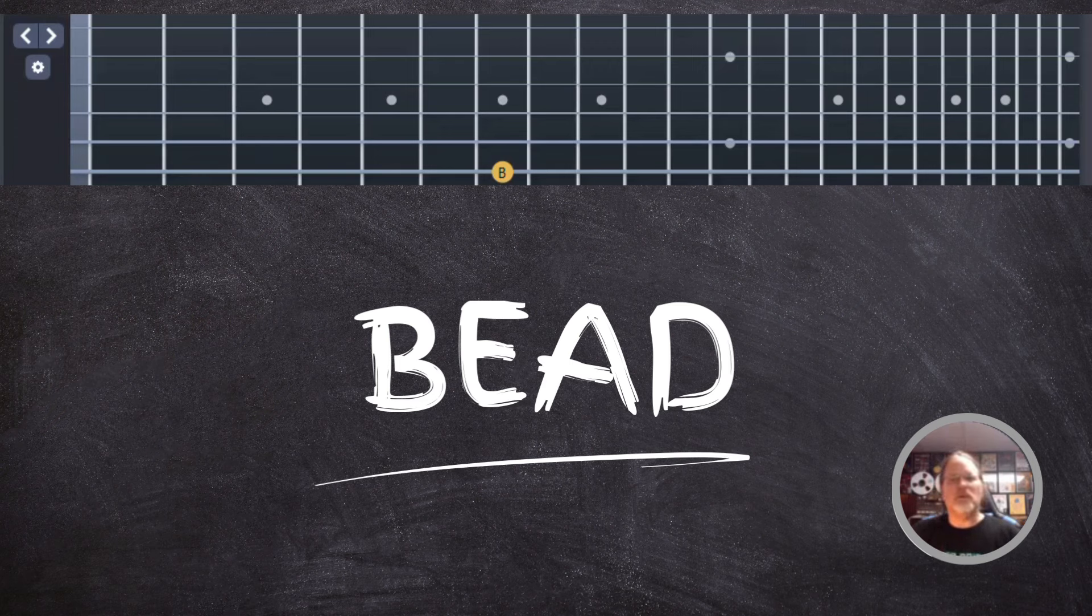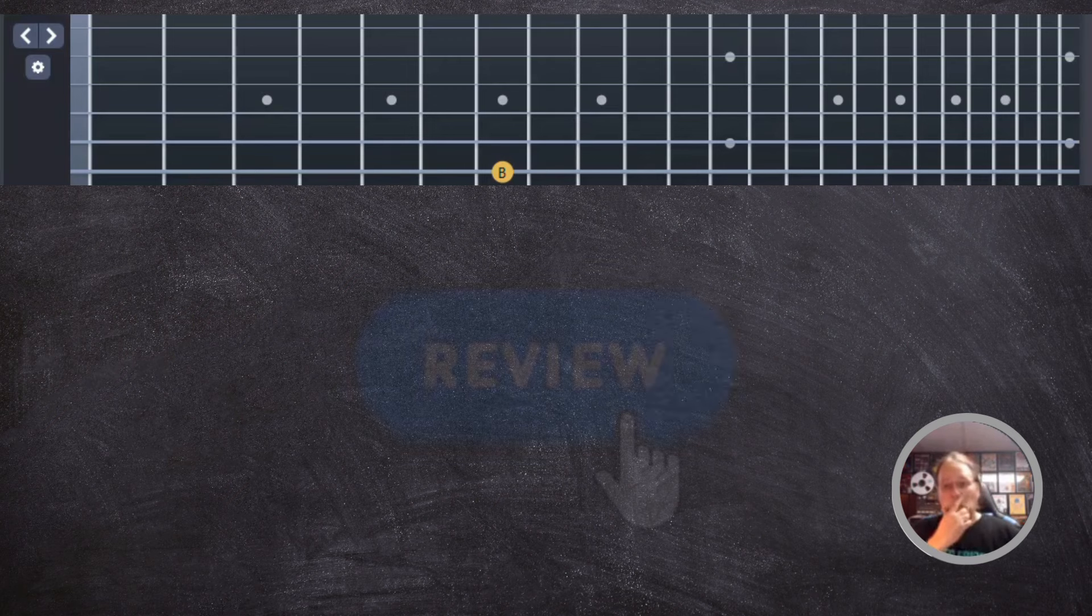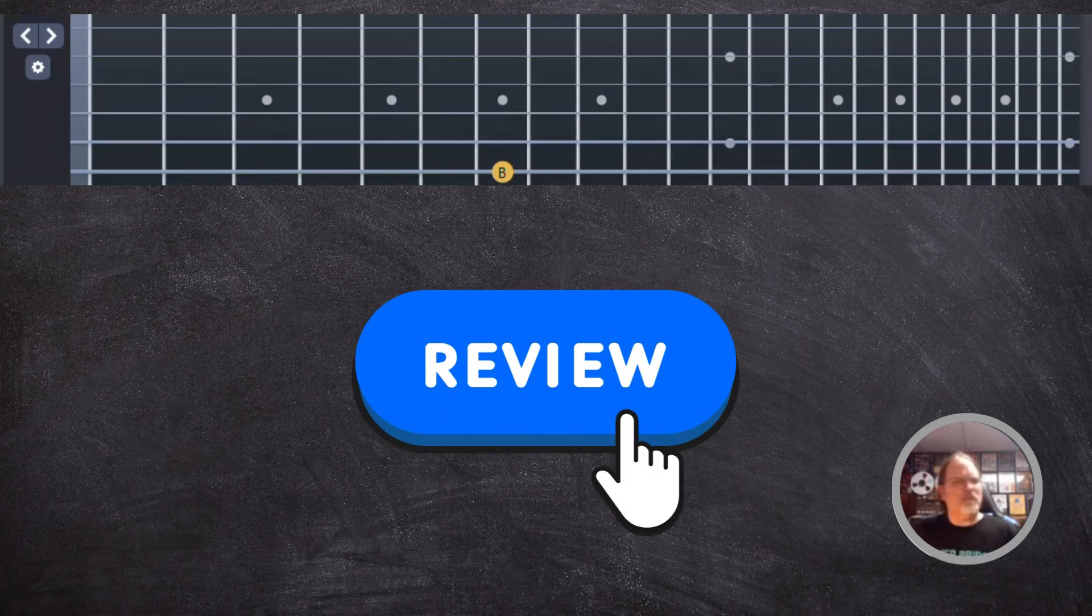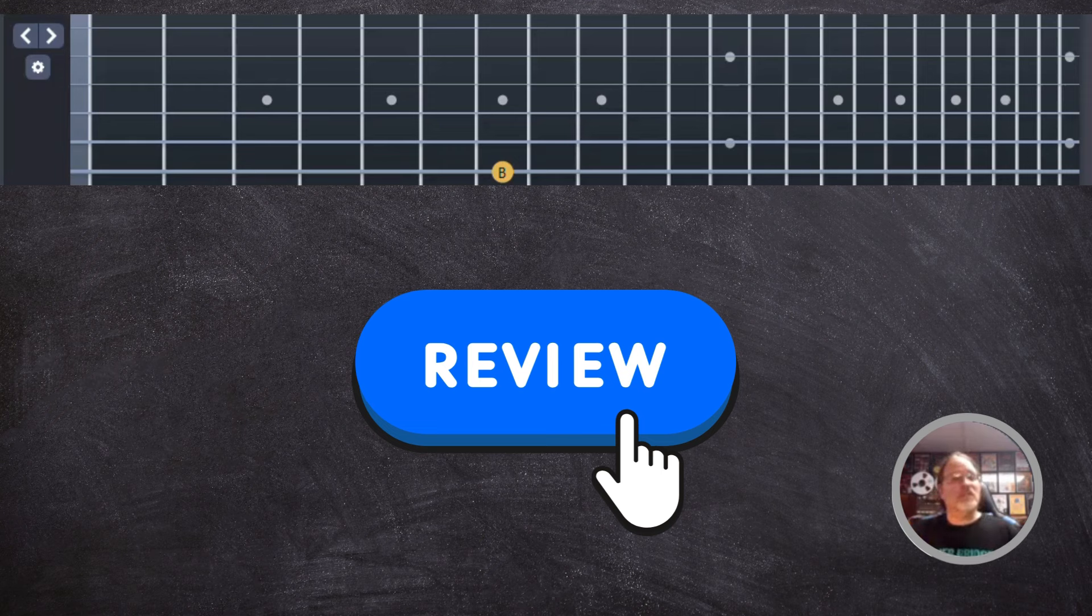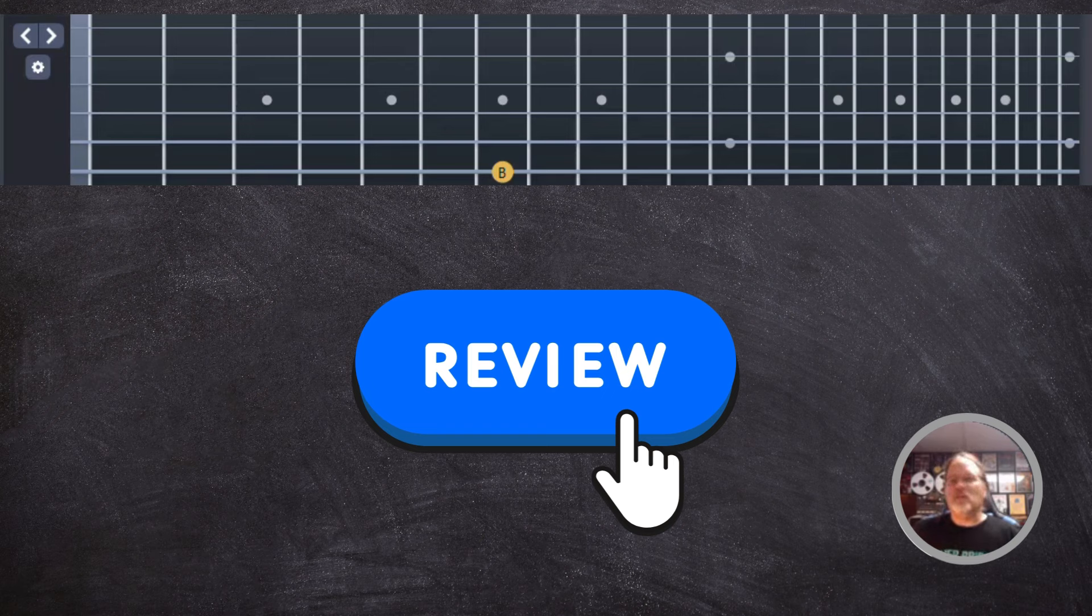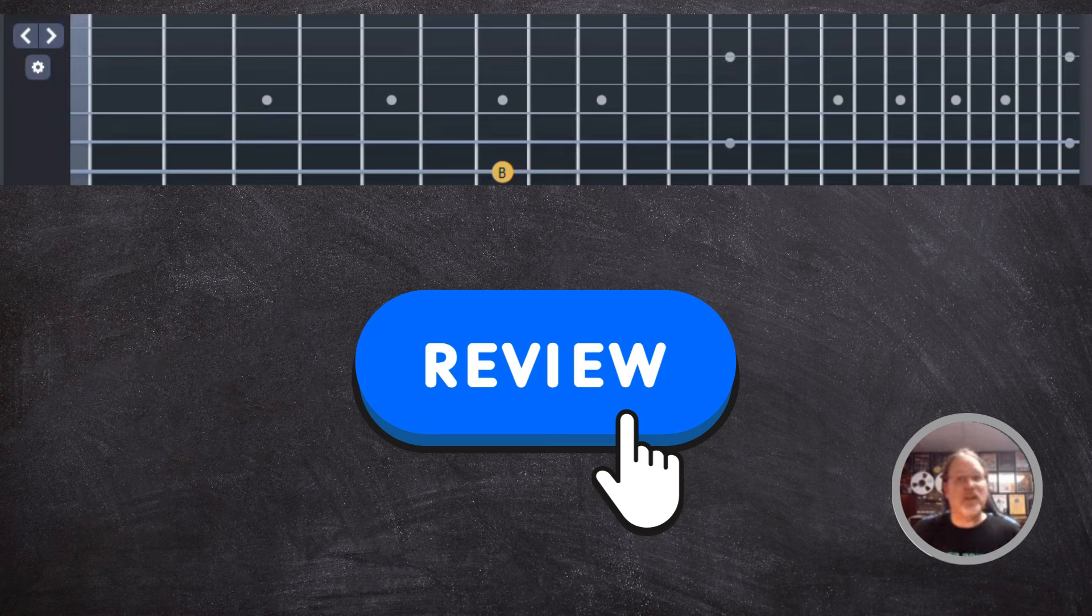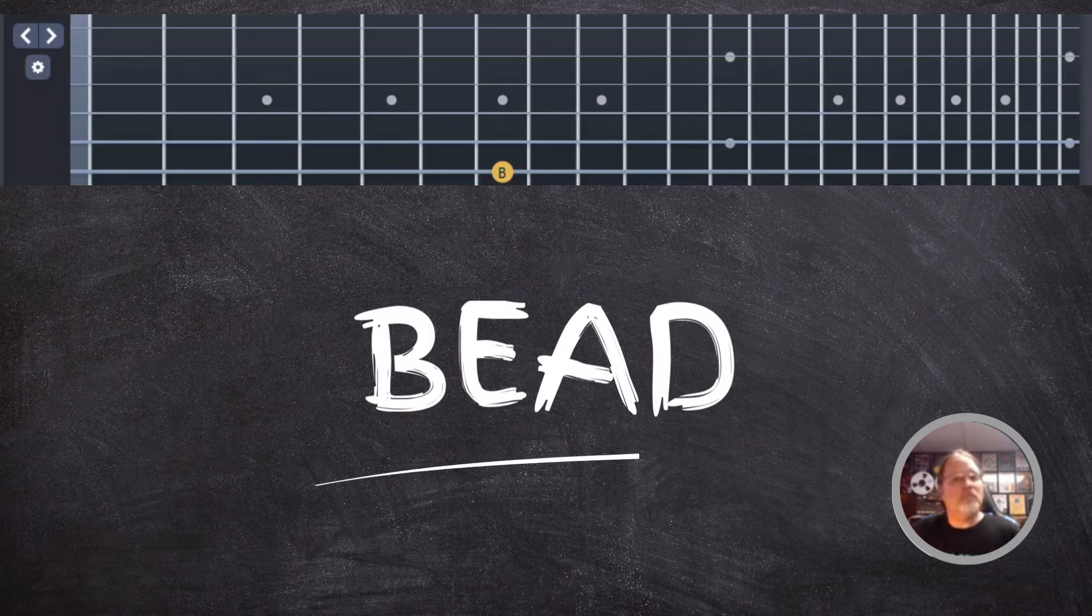But we have to find our notes on the low E string first. Just to review a little bit, this is going to help you with finding all your notes. We're going to do the same thing on the E string and the A string later on. I'm going to mix them up and stuff, and this is just really going to solidify all your notes on the E and A strings. We're going to work on the rest of them too, but for now we're focusing on the E string only.